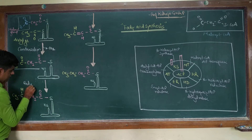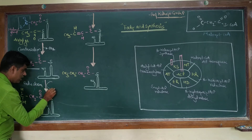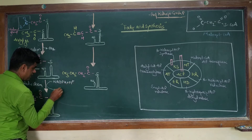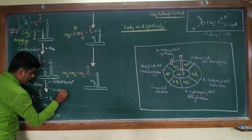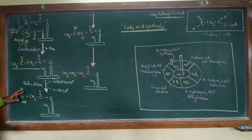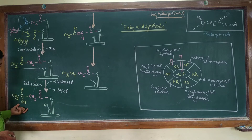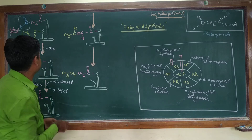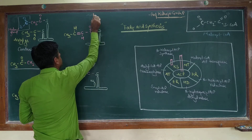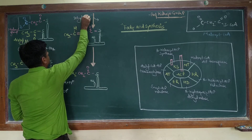The next step is reduction. In this reduction, NADPH + H⁺ acts as the donor of reducing equivalents. NADP⁺ is formed and there is a reduction: hydrogen atoms are added, converting the keto butyl group to a hydroxyl group.